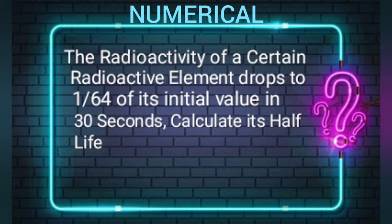Let's read the question first. The question is: the radioactivity of a certain radioactive element drops to 1/64 of its initial value in 30 seconds. This means that in 30 seconds the radioactive element drops to 1/64 of its original value. Let's go to our pen and paper method to solve this problem.